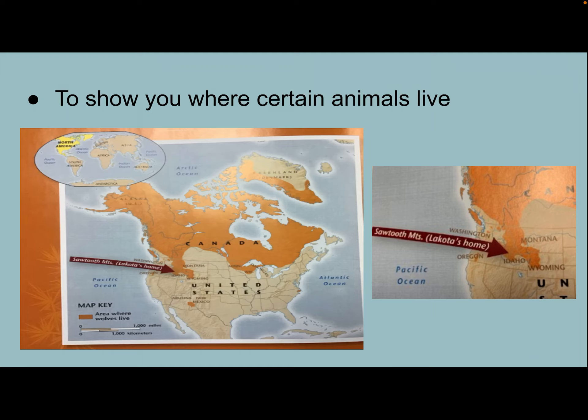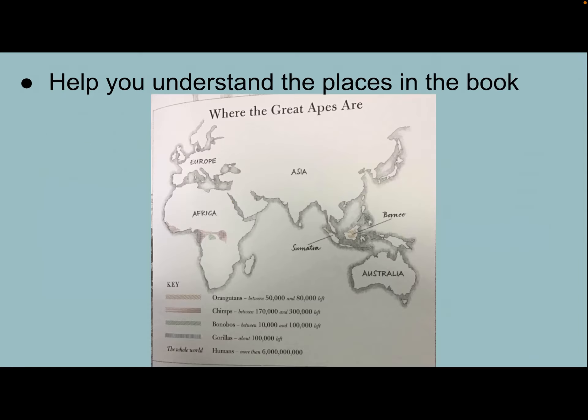They can also use maps to show you where certain animals live. Like in the book A Friend for Lakota, the author includes a map so we can see where Lakota's home is in the Sawtooth Mountains.